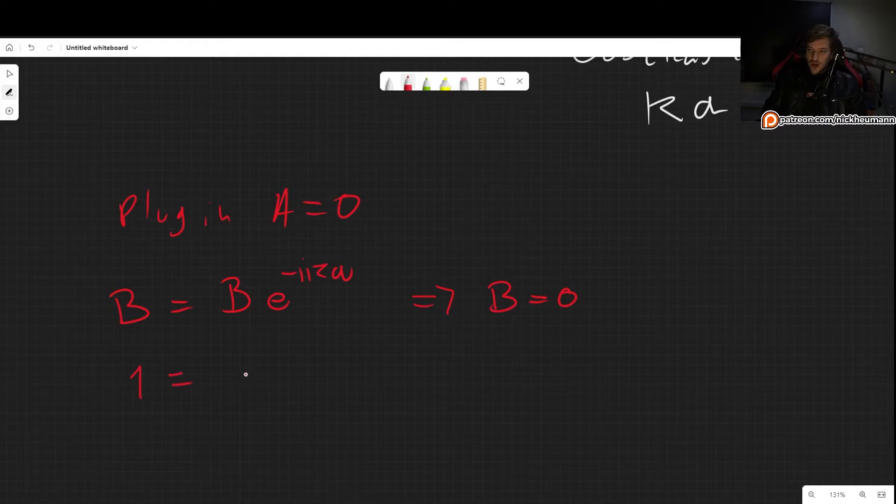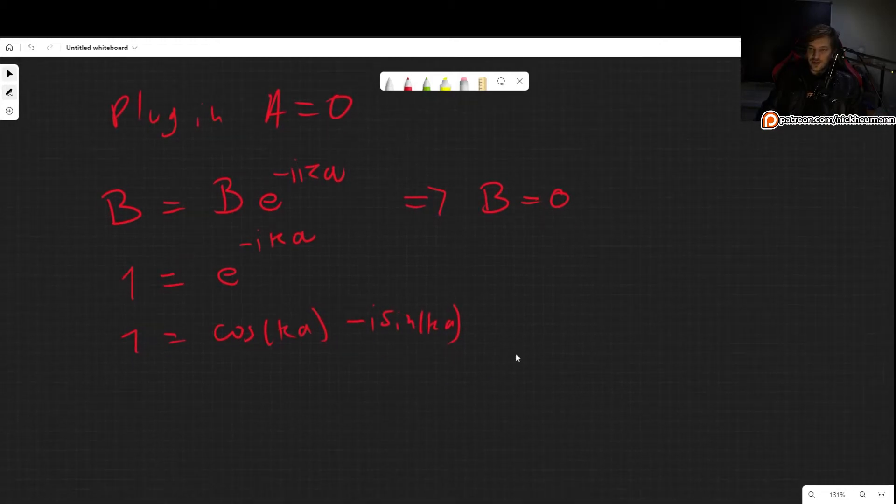So the only other option is that 1 has to equal e^(-ika). This means that 1 has to equal cosine(ka) - i·sine(ka). And this is fulfilled when this is 0 and when this is 1, just as before. So when ka equals 2nπ. So this is the condition.